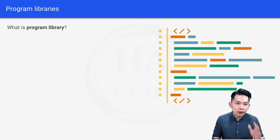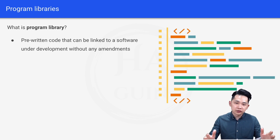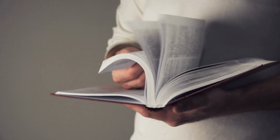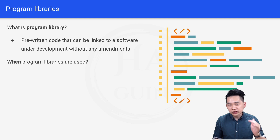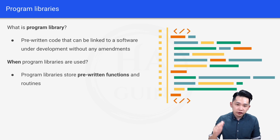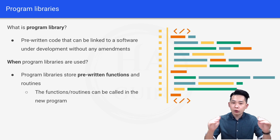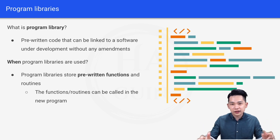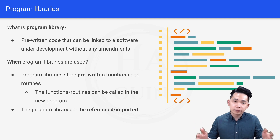So first of all, what is a program library? A program library is pre-written code that can be linked to a software under development without any amendments. You can think of it like a big book — there are a lot of ideas and instructions that a computer can use to execute different tasks. Program libraries store pre-written functions and routines so they can be called in a new program, and they can also be referenced or imported.